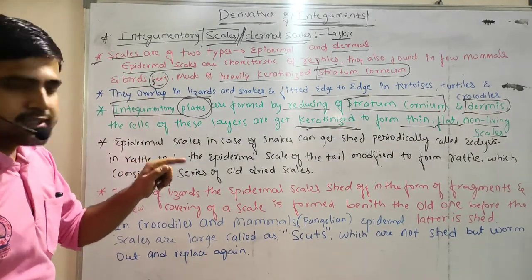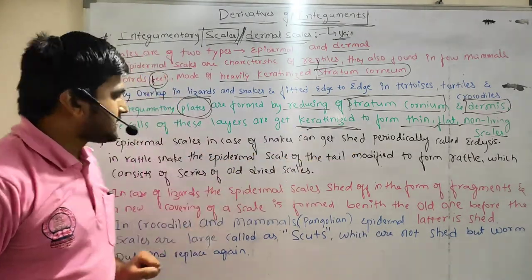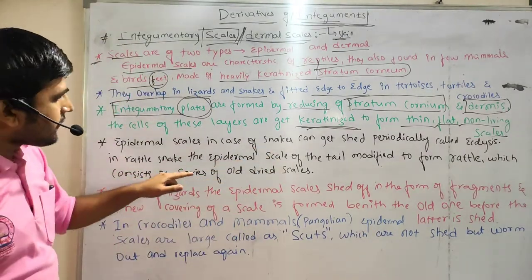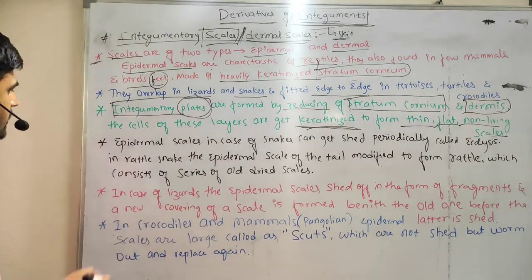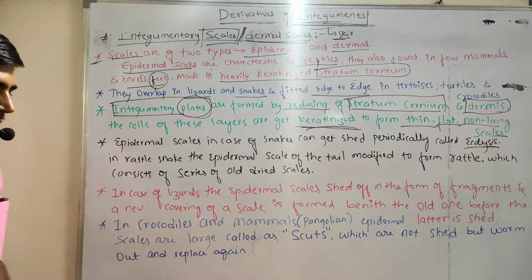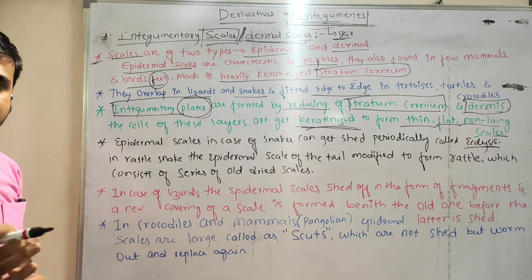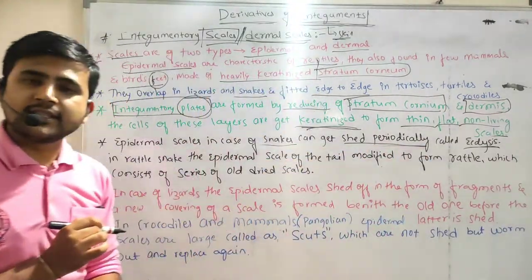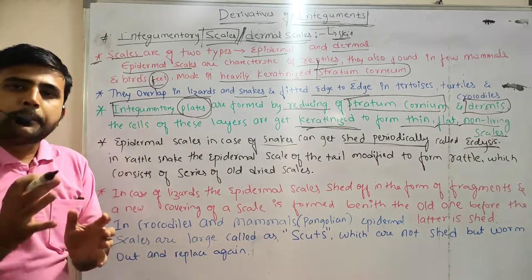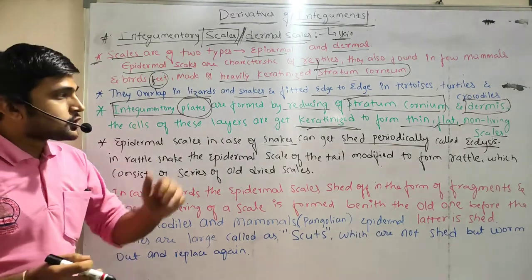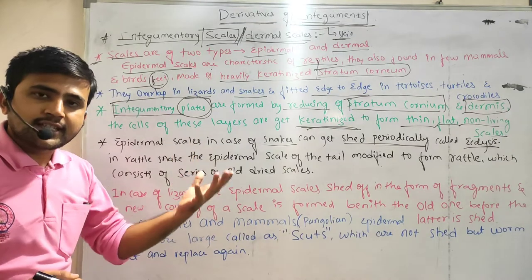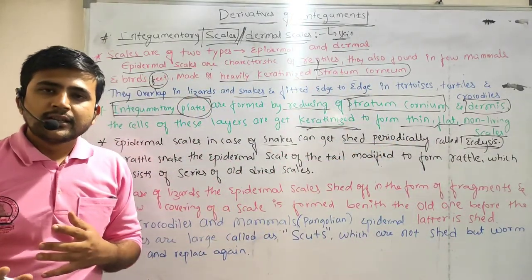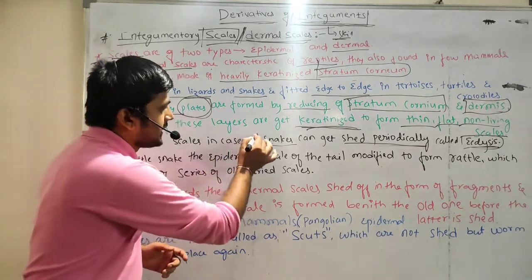Epidermal scales in case of snakes can get shed periodically. This process is called ecdysis — the natural process found in some reptiles, for example snakes. So epidermal scales in snakes can shed periodically; they will be removed periodically according to time. That shedding of the skin or scales in snakes is called ecdysis.